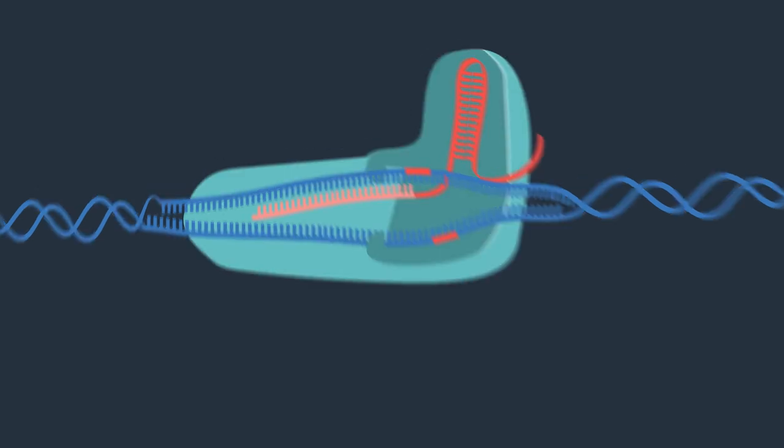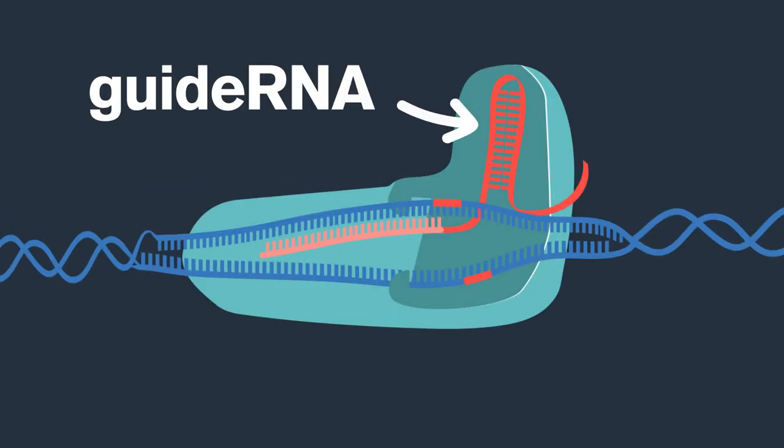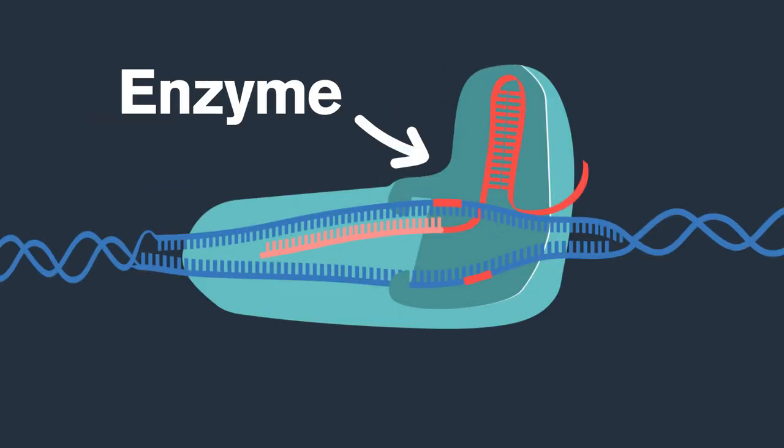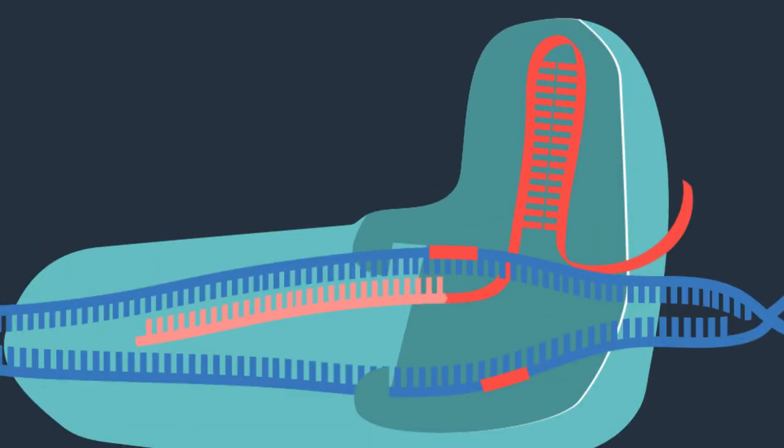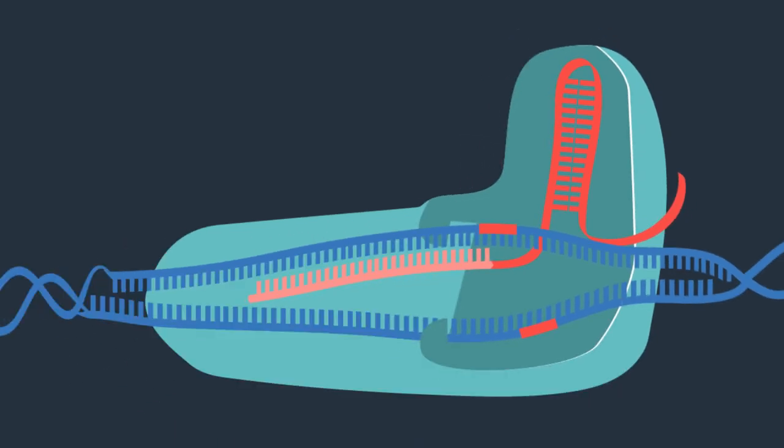CRISPR has two main parts. A piece of RNA, called guide RNA or gRNA, and an enzyme that cuts DNA. The gRNA can be made to find and connect to a specific place on a strand of DNA. Once the gRNA has lined up the CRISPR system on the DNA, the enzyme cuts the DNA. The enzyme used most often as a part of CRISPR is called Cas9.